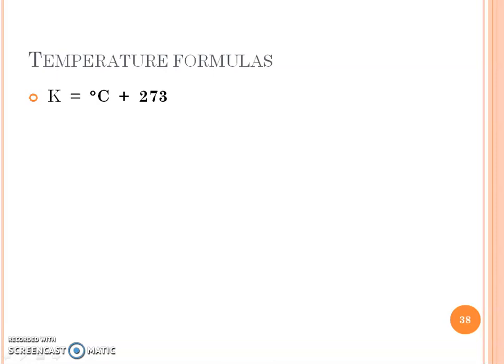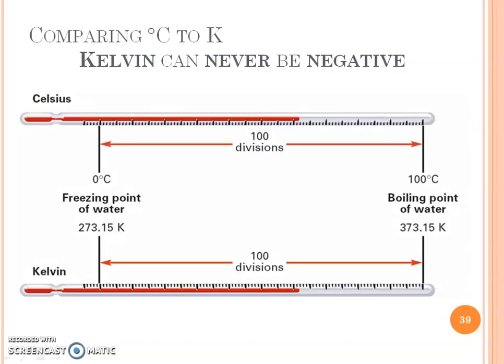So here are our temperature formulas. When we need to solve for Kelvin, we're going to take our degrees Celsius temperature and add 273. So how are we going to get degrees Celsius? We're going to subtract from our Kelvin. So this is comparing the Celsius and Kelvin. And I want to remind you that Kelvin can never be negative, okay? Kelvin actually starts at the zero mark, basically. It can never be in the negative. Like you can have negative degrees Celsius. You cannot have negative Kelvin. And the divisions are the same. There's 100 divisions. The divisions are the same. They're just dealing with larger numbers in the Kelvin unit.